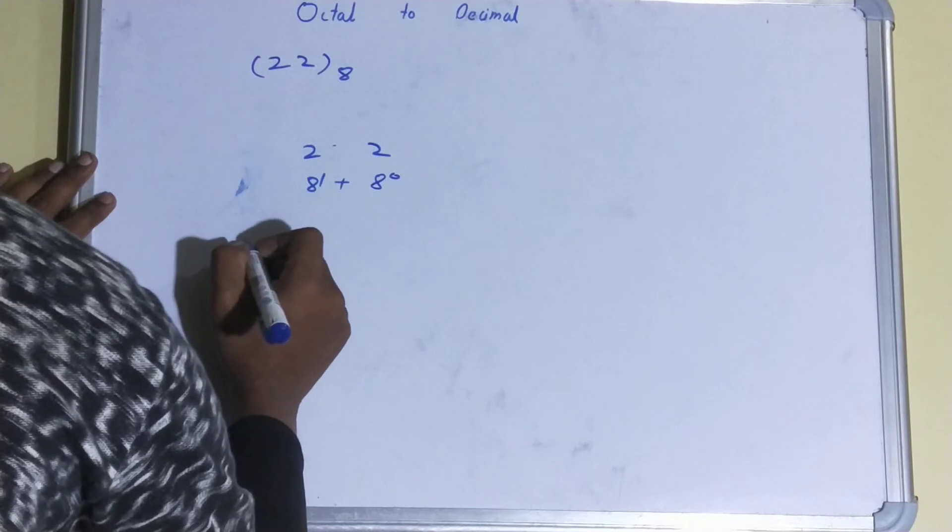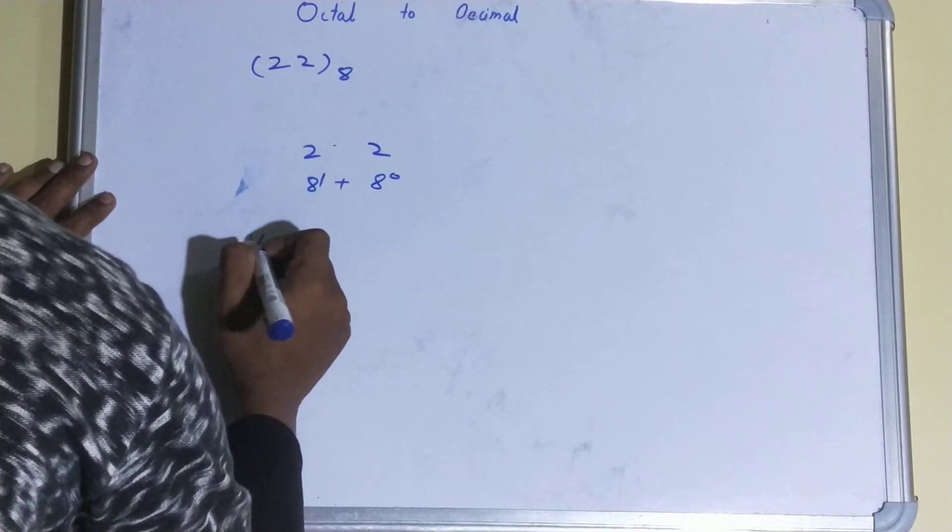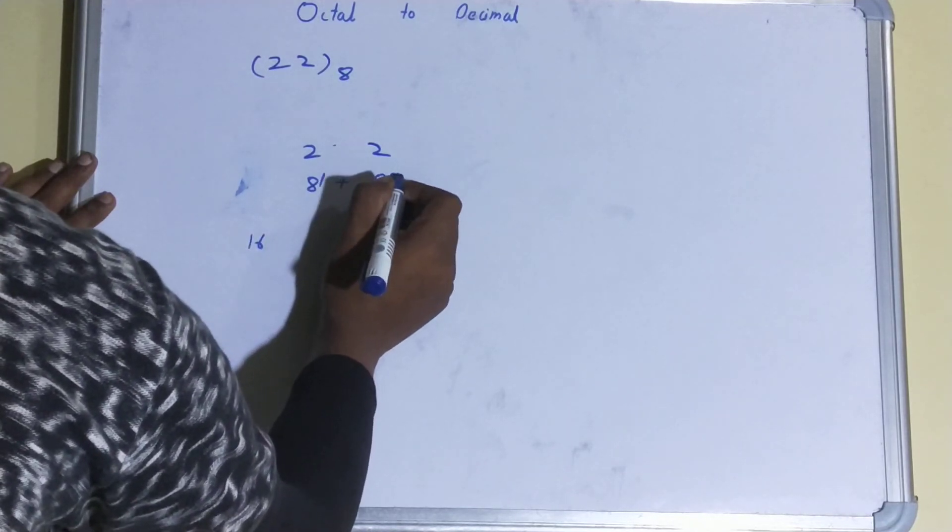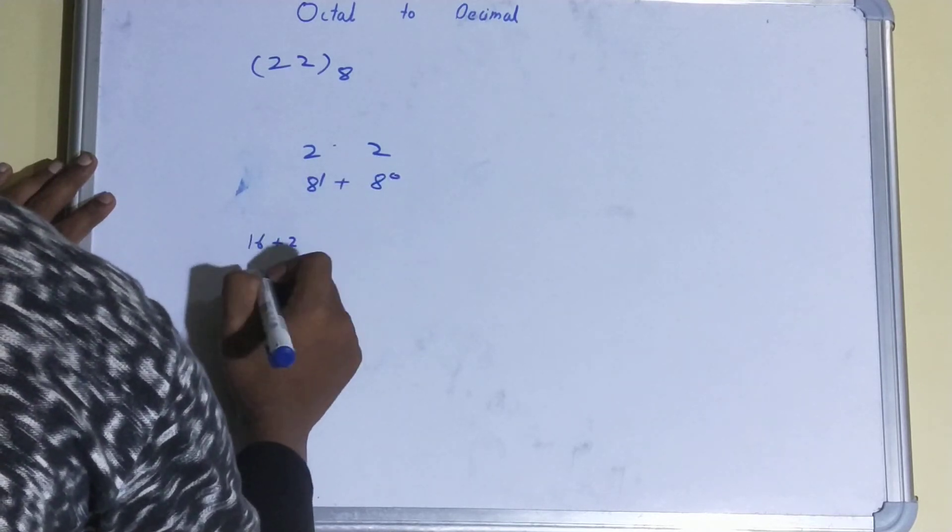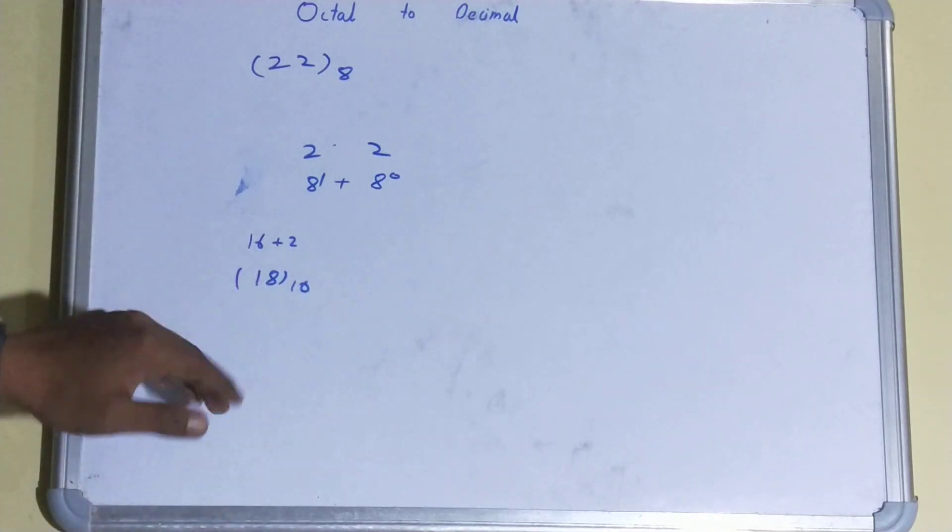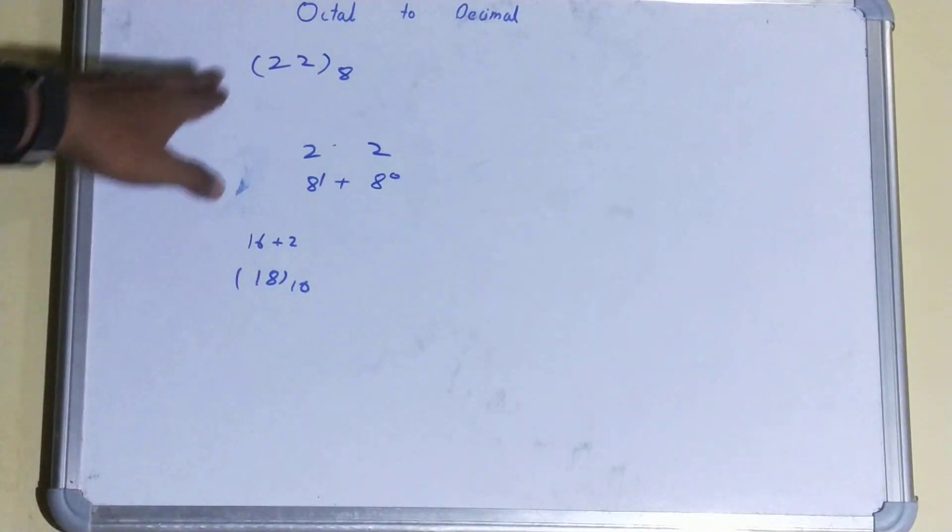So 8 to the power 1 into 2 will be 16, and 8 to the power 0, that is 1 into 2, will be 2. So it will be 18 base 10. So again, this is your equivalent decimal for this octal.